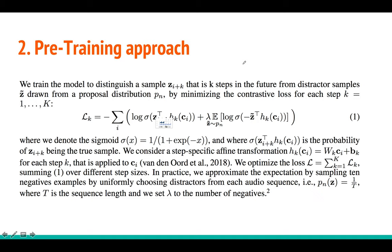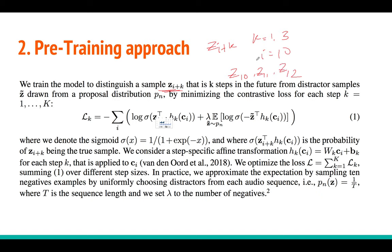Now, how do we train it? The algorithm, instead of directly predicting future samples, tries to distinguish the future samples from random samples in the data. This is also known as noise contrastive estimation — you may have seen this in word2vec. We want to distinguish the actual future samples (z_{i+k} for k = 1, 2, 3...) from distractor samples. So for example, if i equals 10, we want to identify z_{11}, z_{12}, z_{13} as the true future samples versus randomly drawn distractors.